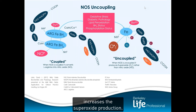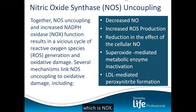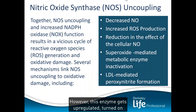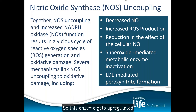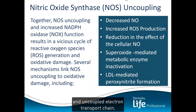There's an enzyme called NADPH oxidase, or NOX, whose only function is to increase superoxide. This is used by our immune system to fight bacteria and fungi. However, this enzyme gets upregulated — turned on — by toxic environmental factors like mold, heavy metals, chronic infections, and chronic inflammation, making tons of superoxide. So we've got three main ways we make superoxide: NOS uncoupling, NADPH oxidase (NOX), and an uncoupled electron transport chain.